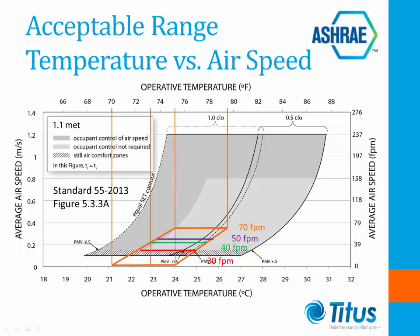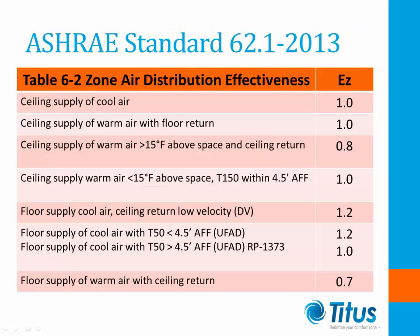And finally 70 feet per minute, which is the maximum velocity for ADPI, is the upper brown line. With ADPI, the temperature range is based on the control temperature in the space. So for spaces where occupants are wearing lighter clothing, the control temperature can be adjusted upward to compensate. For example, a CLO of 1.0 may represent winter attire and 0.5 CLO may represent summer attire, and each would have separate control temperatures.